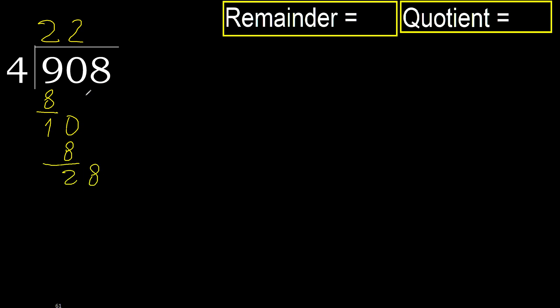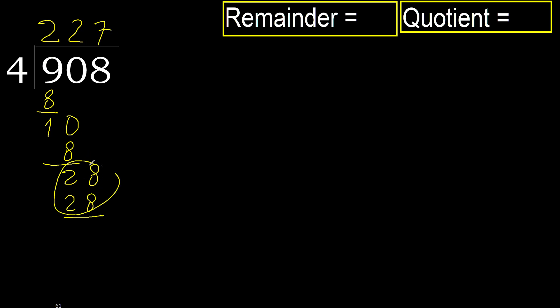Bring down: 28. 4 multiplied by 7 is 28, which is not greater. Subtract, then next.